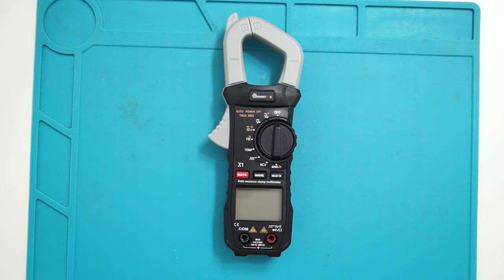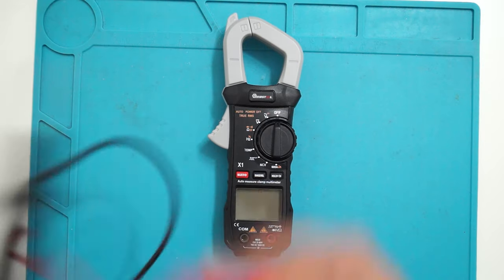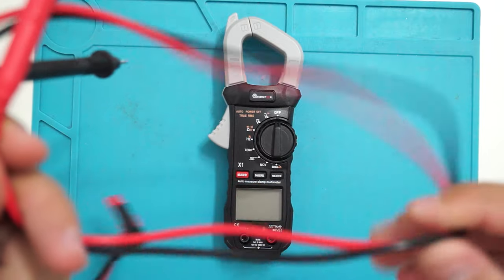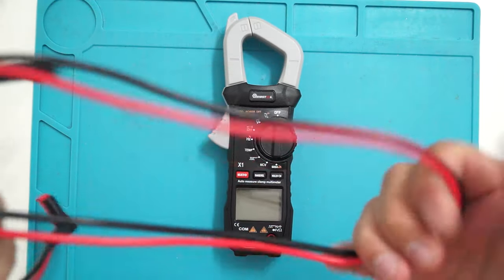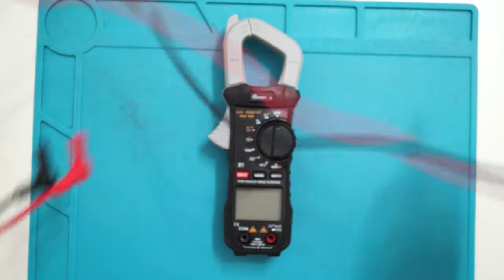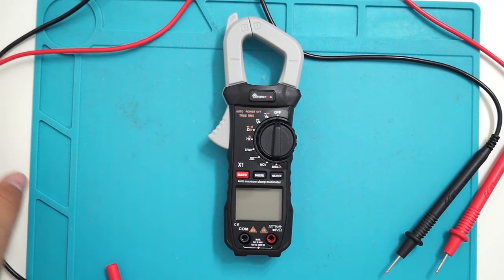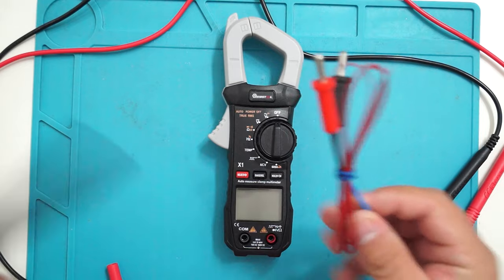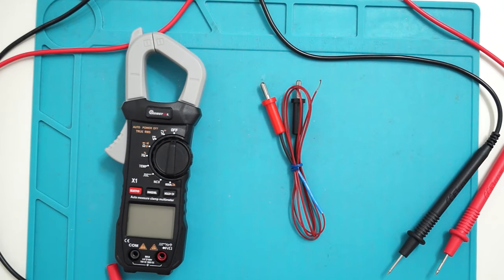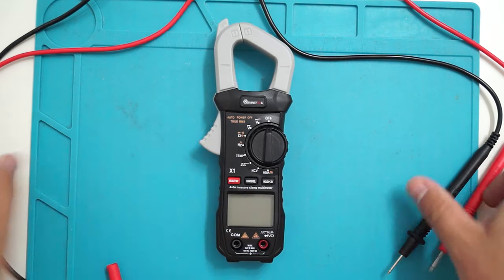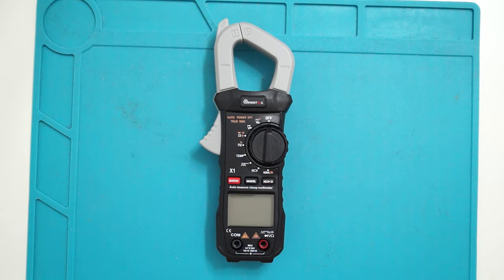One pair of test leads, one type K thermocouple, and two AAA batteries. I also didn't receive the batteries. The test leads are very good quality. The cable insulation is made of silicon, it's very soft, very nice. And as it said in the manual, you also get this thermocouple. So that's all you get in the box.